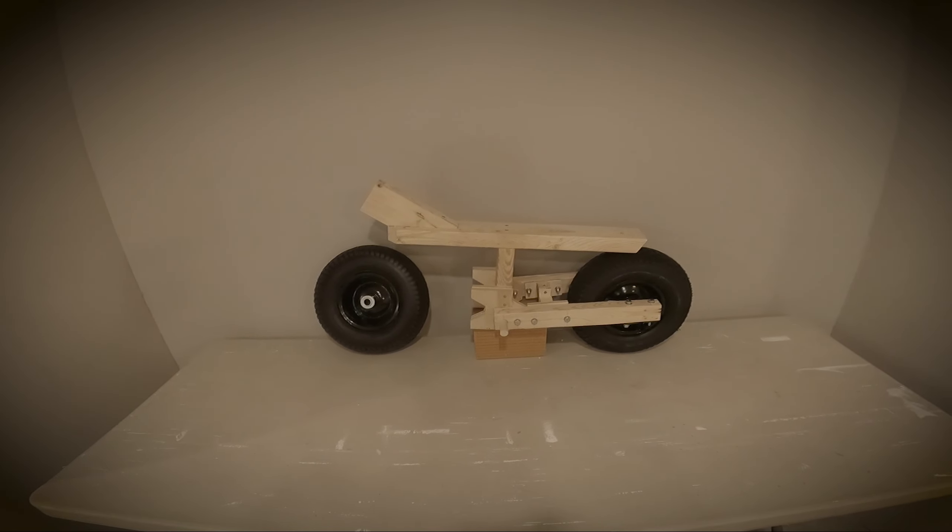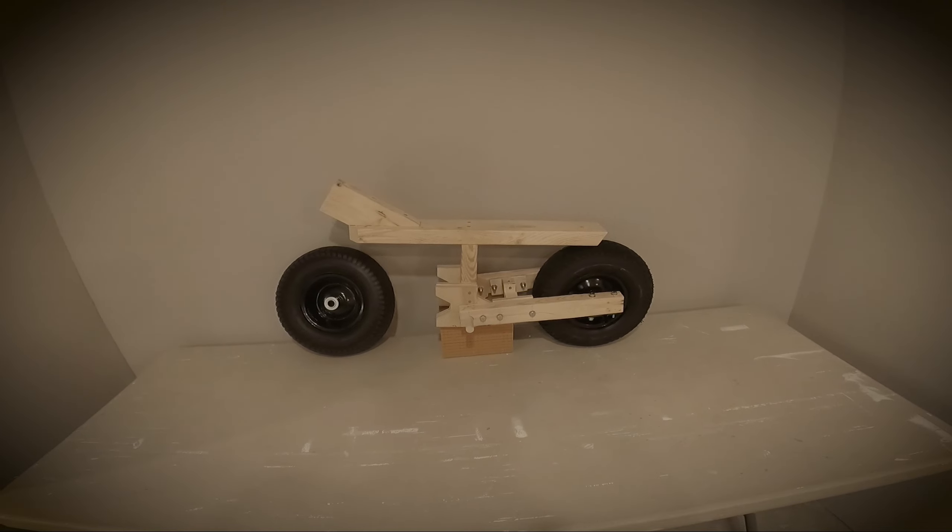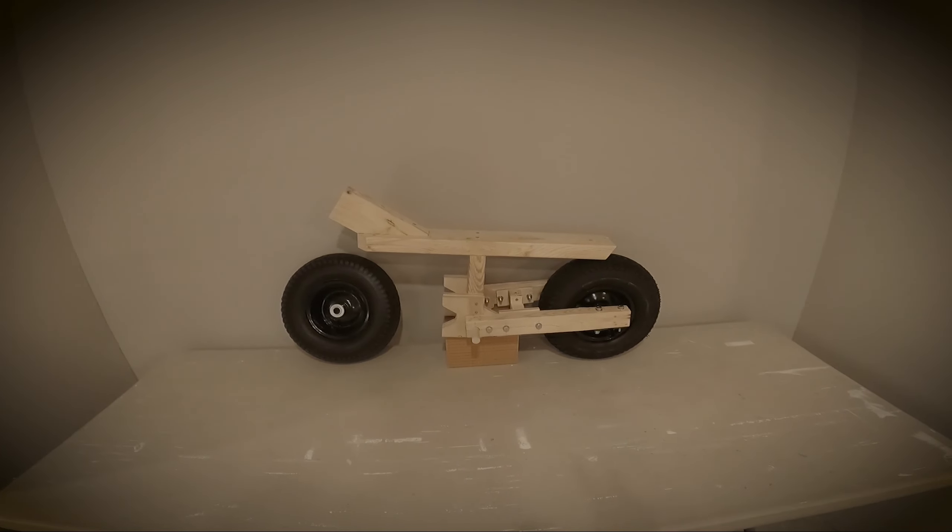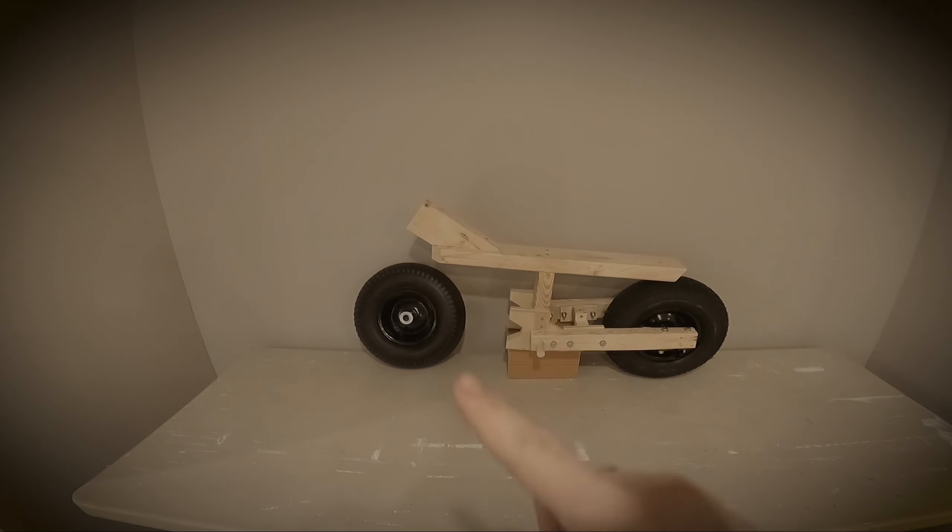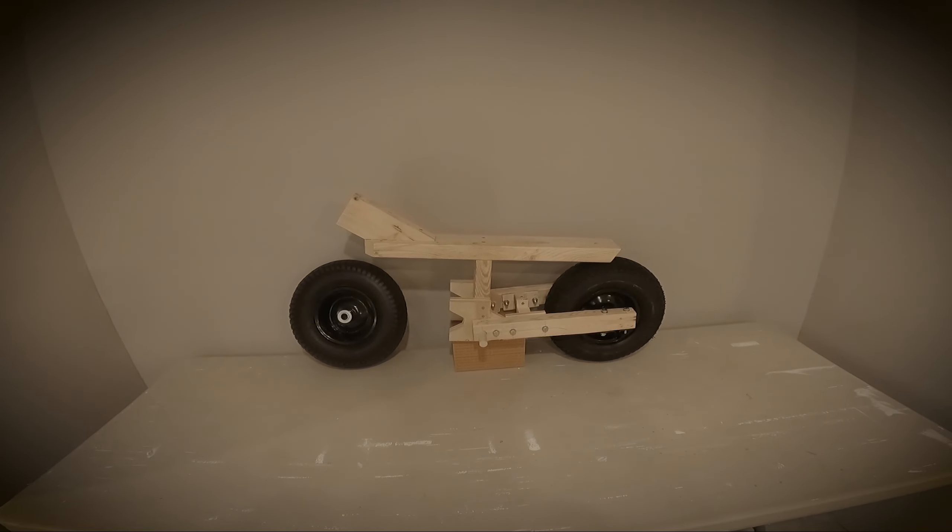What's up everybody, welcome to Balkan Moto. Last time we ended up making the swing arm and lining things up. In this episode we're gonna work on the triple tree and the forks. So let's take a look at the pieces of wood that we're gonna be cutting.